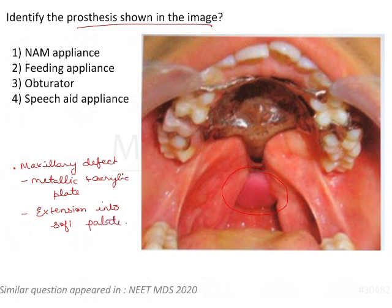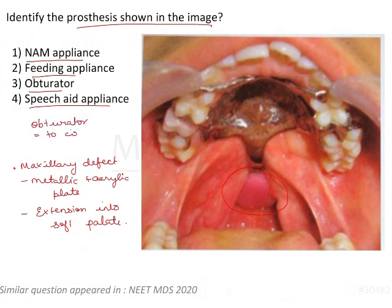The options are: naso-alveolar molding appliance (NAM appliance), feeding appliance, obturator, and speech aid appliance. The word obturator technically means to close or to seal, so this appliance is definitely a type of obturator, but if the other options are more specific, we should focus on those.